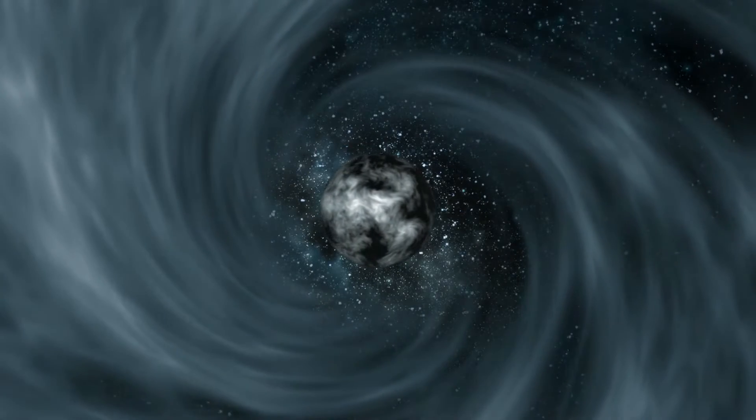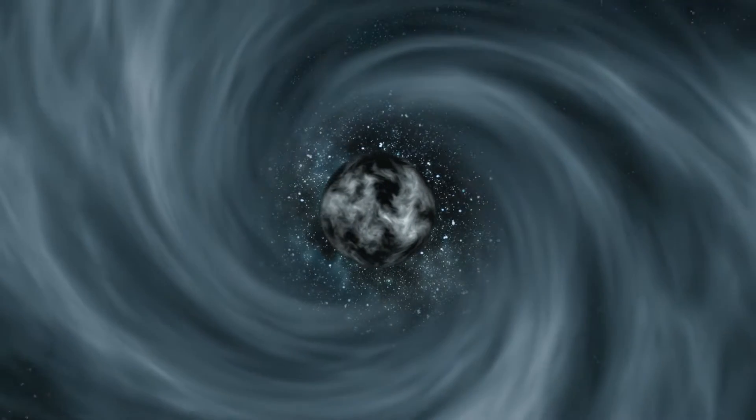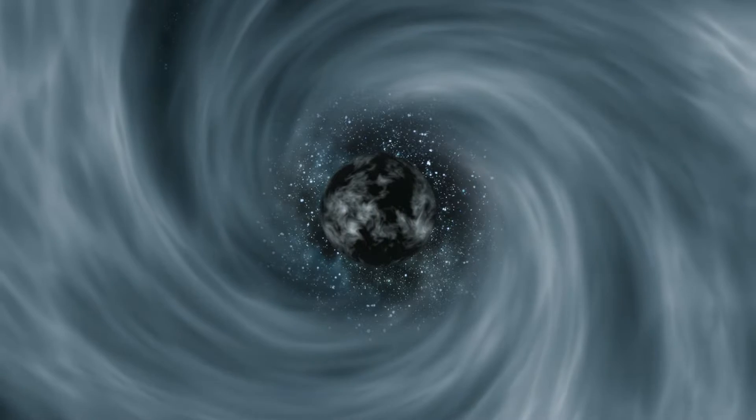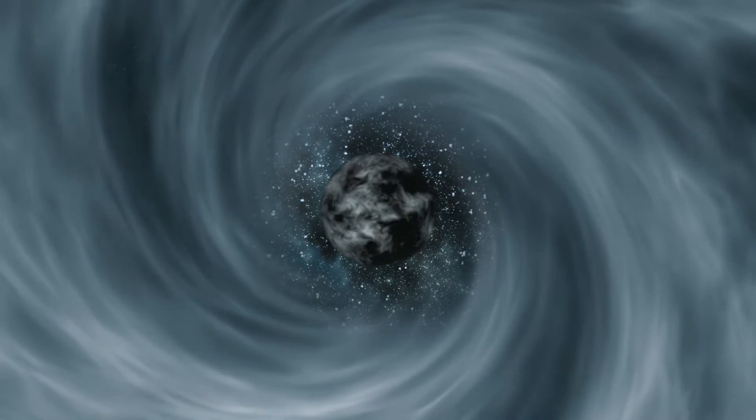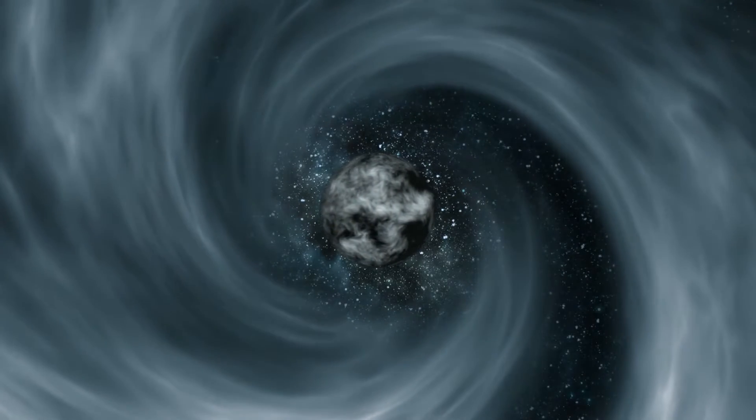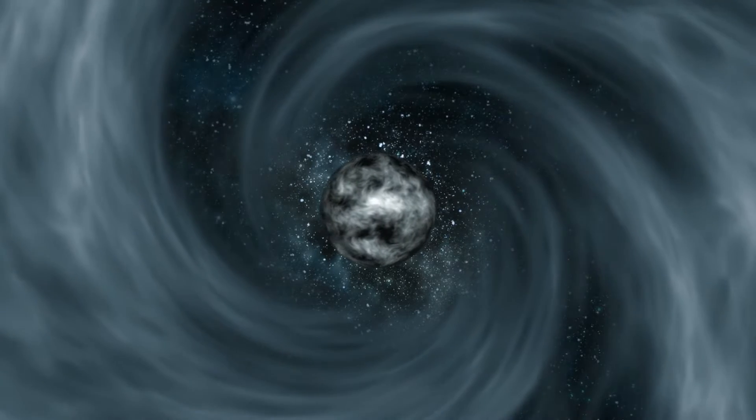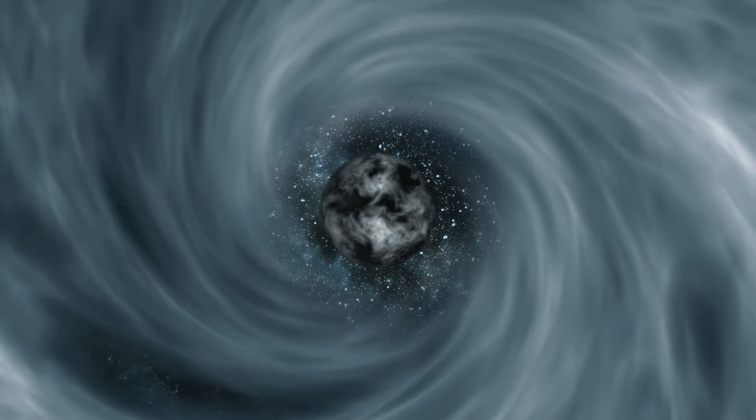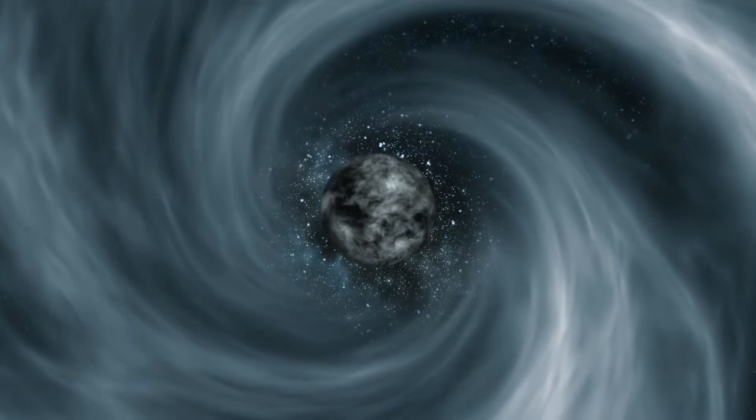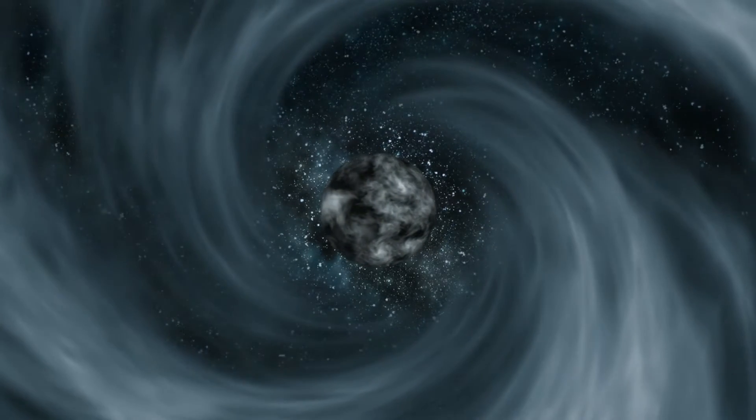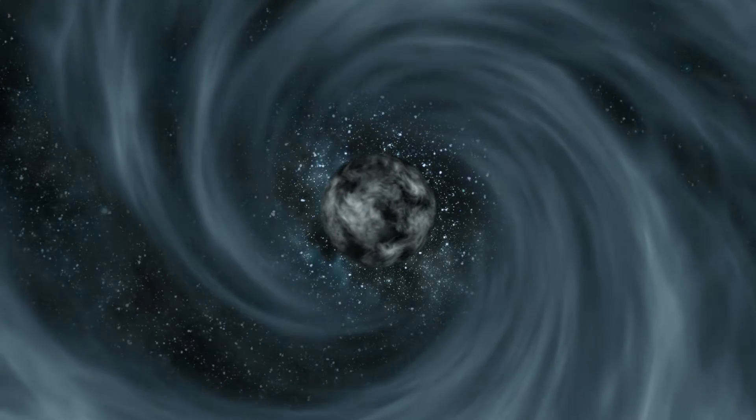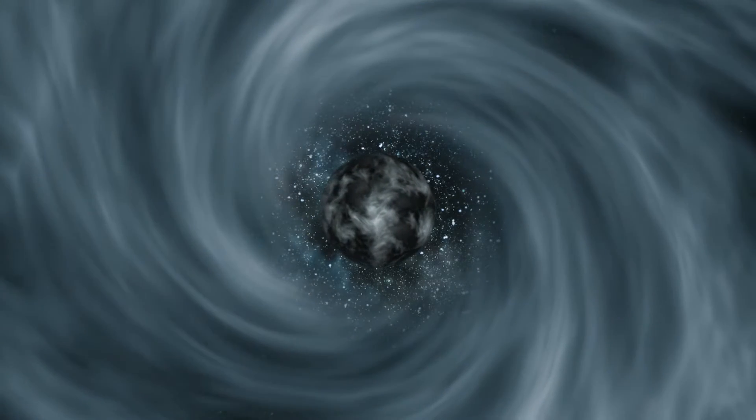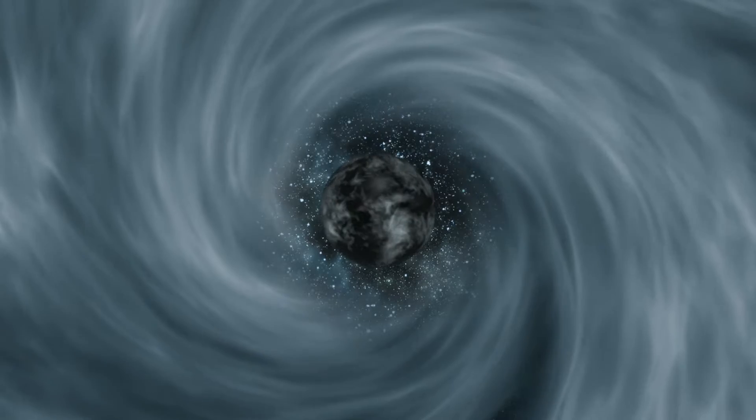So far, gravitational waves have allowed us to identify the majority of black holes that spin rather slowly. About 40 times as massive as the Sun, the largest black hole in this binary was spinning almost as quickly as it was physically conceivable. According to the current models of how binaries emerge, this one was incredibly unusual, perhaps occurring once in a thousand times.